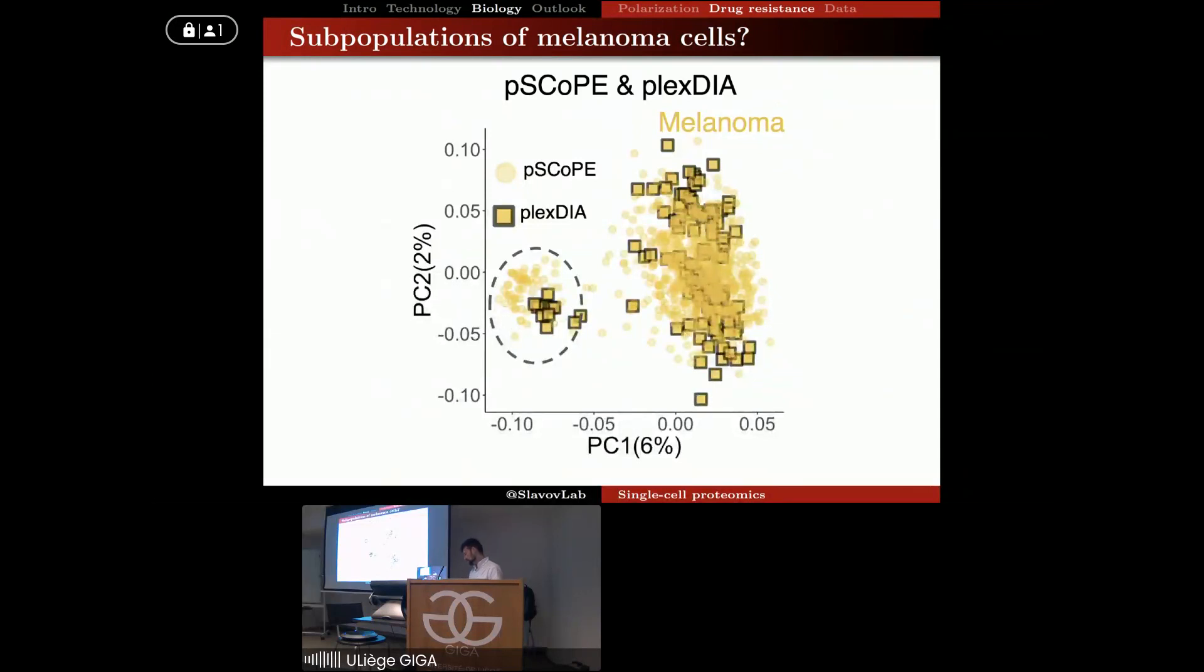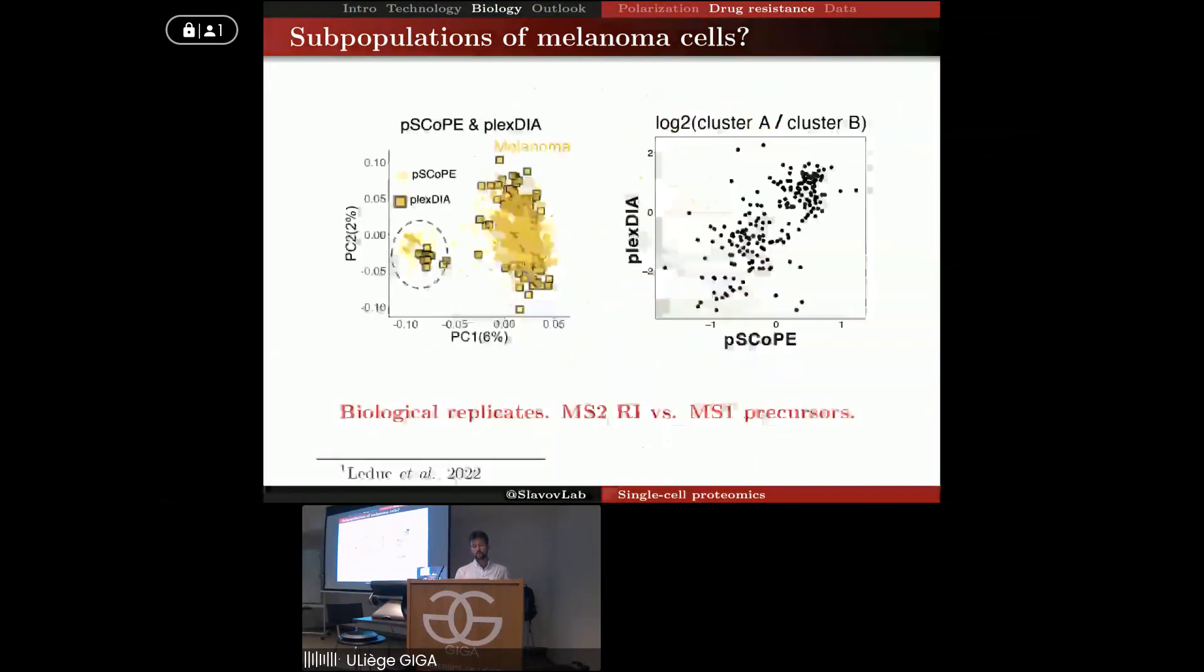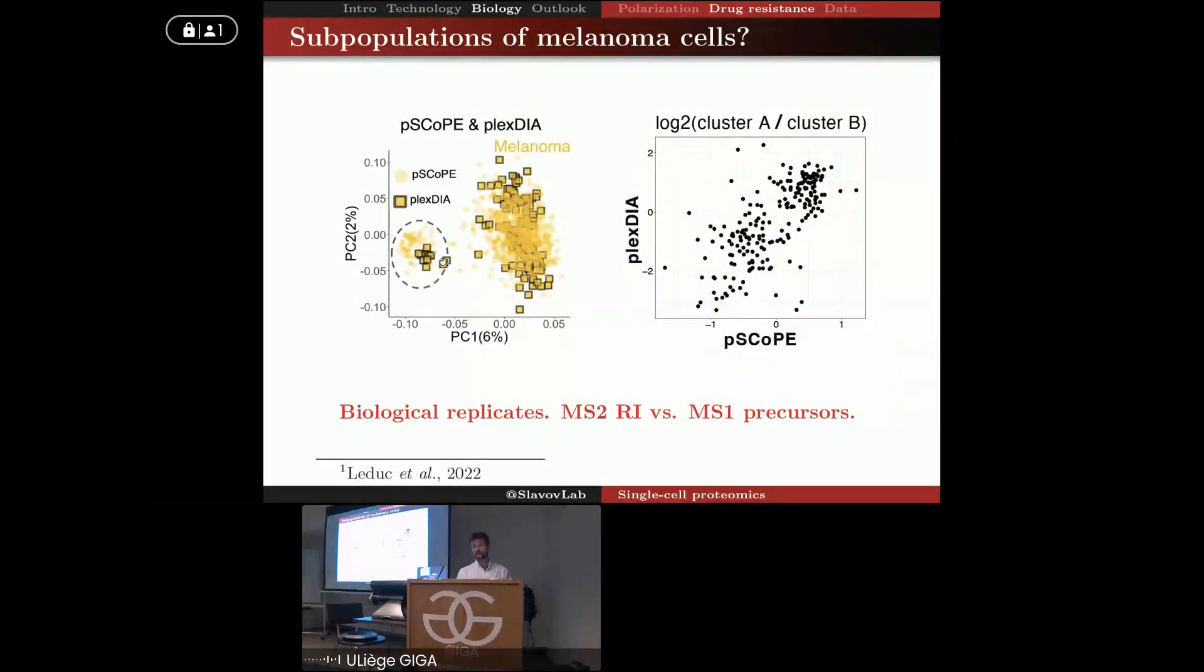But to really convince ourselves that this separation is real of those clusters, we simply analyzed different biological properties of those cells with two very different mass spectrometry methods. One was this prioritized analysis - and the prioritized analysis here shown is pSCoPE. This does measurements at MS2 level on the reporter ions, while the Plex-DIA does measurements at MS1 level on the precursors. And these are two completely different ways of measuring protein abundance that share very few biases in common. So if we can see that those two different methods give very similar results, we can have high level of confidence. And in fact, when we compare it even more quantitatively, the relative protein levels between this cluster here and this with the two different methods, we saw that they're highly concordant.